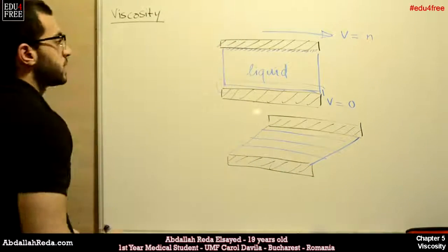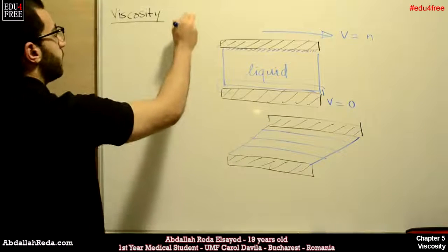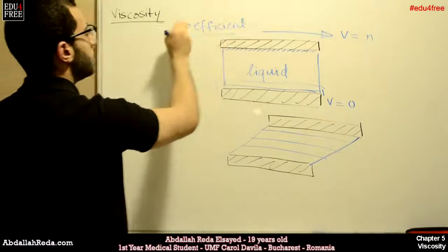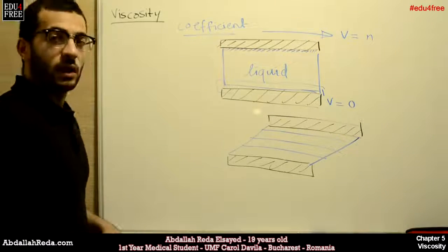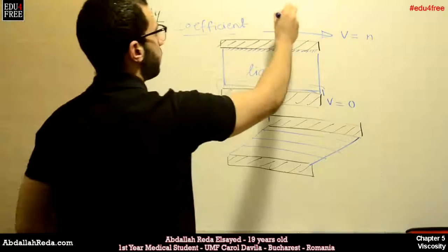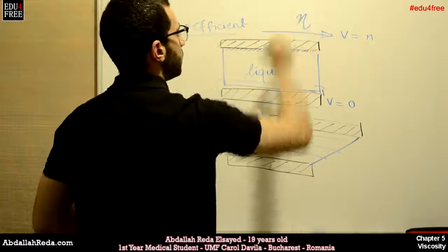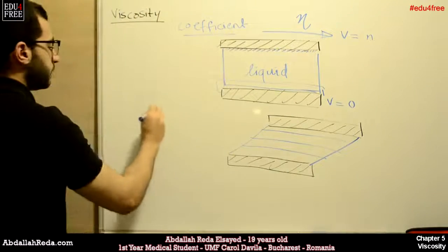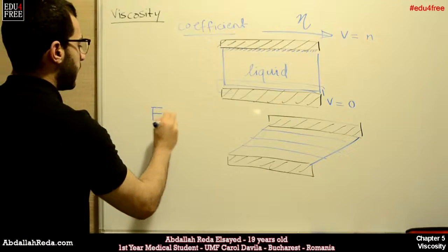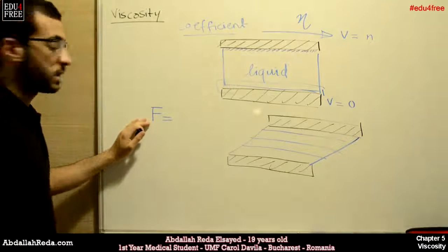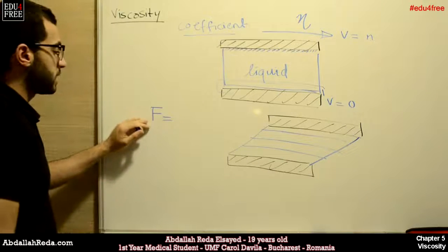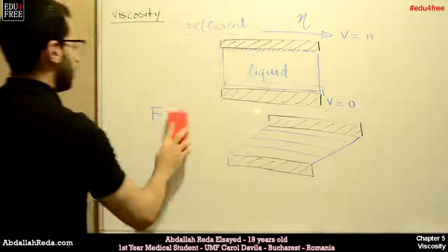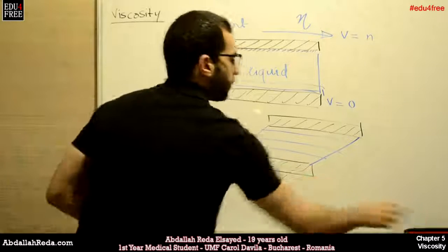Accordingly, viscosity has a coefficient. The coefficient of viscosity is referred to as eta (η), and it is defined through the force of viscosity.